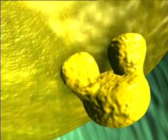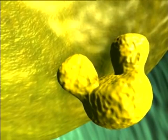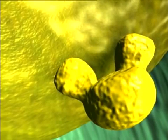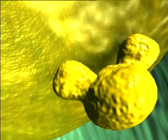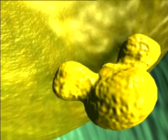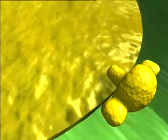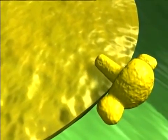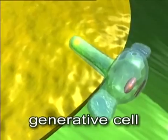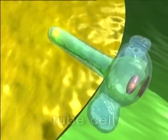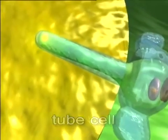Inside the ovule on the surface of the megasporangium, the pollen grain begins to swell and form a tube-like growth. The generative cell remains inside the pollen grain, while the tube cell directs the growth of the pollen tube.